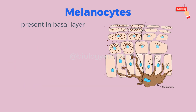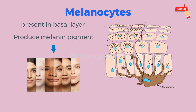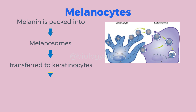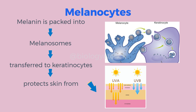Next are melanocytes. These are found in the basal layer of the epidermis. These cells produce a black-colored pigment called melanin, which is responsible for skin pigmentation. Melanin is packaged into small parcels called melanosomes, which are then transferred to keratinocytes. Melanin protects the skin against ultraviolet rays.